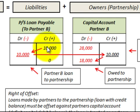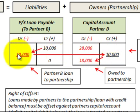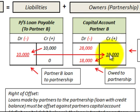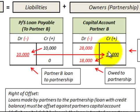What we do with this right of offset is we close out the loan payable to partner B and transfer it into partner B's capital account. We debit loans payable for $10,000 and credit the capital account for partner B by $10,000. So we've taken the deficit amount for partner B from $28,000 and reduced it by $10,000.